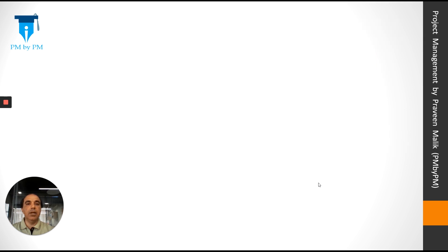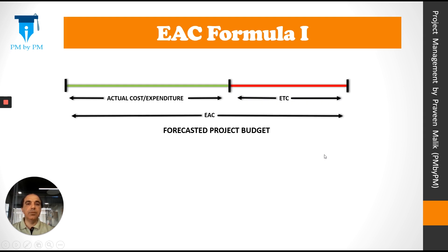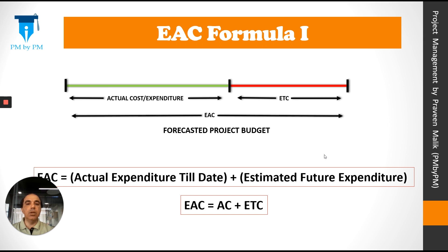Let's look at a formula for calculating EAC. You will notice that EAC is equal to expenditure till date plus estimated future expenditure. So our formula could be: EAC = AC + ETC.